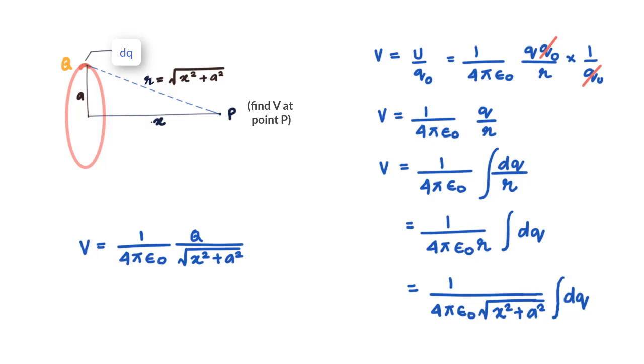Well, we could do a little testing of this equation and take X value much higher than A. In that case, this expression reduces to 1 by 4 pi epsilon Q by X. That is basically potential due to a point charge Q at a distance X which is in line with what we have derived earlier that is at very long distance, the ring starts looking like a point charge to the observer and you would recall that we drew a similar result for electric field of a ring as well.